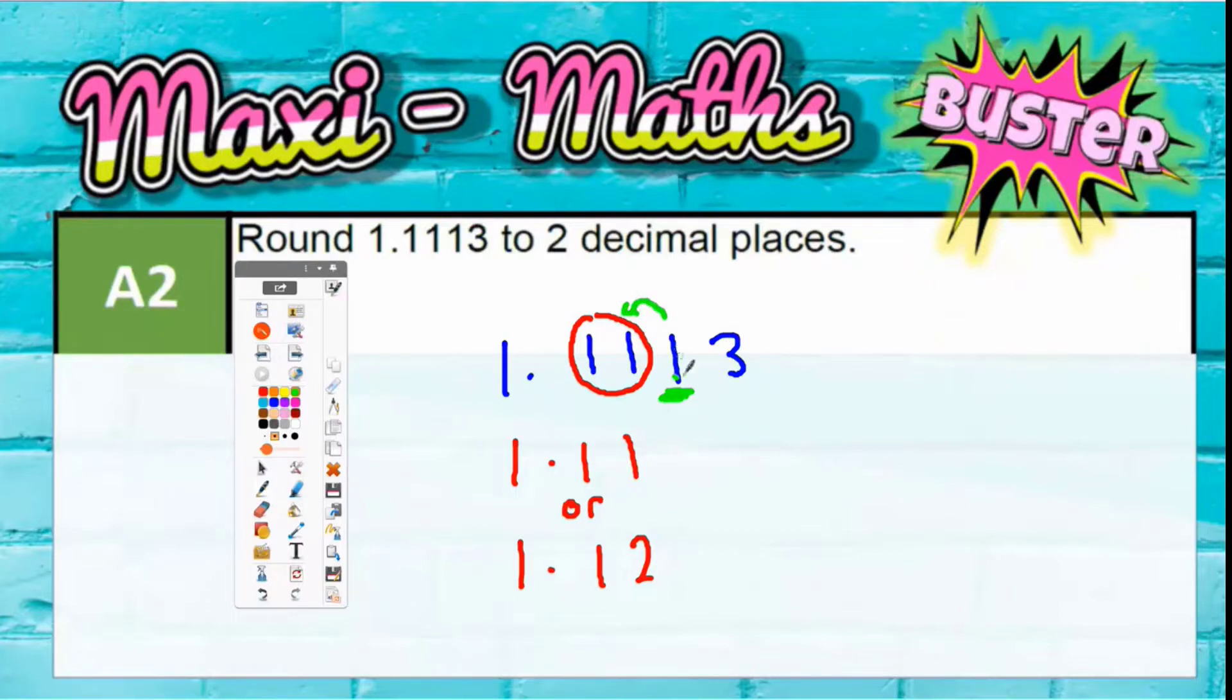So if the third digit is less than 5, which it is, so 1 is less than 5, then the second digit, this 1, stays as it is. So we're not going to round up.